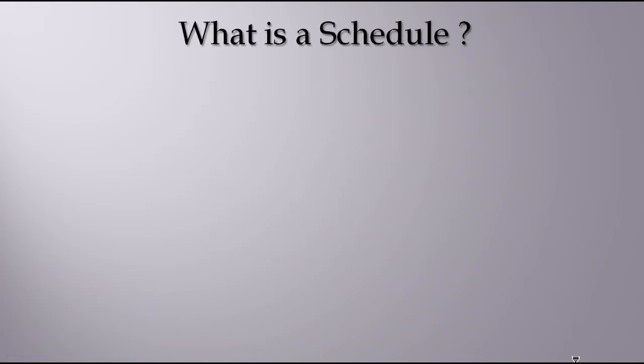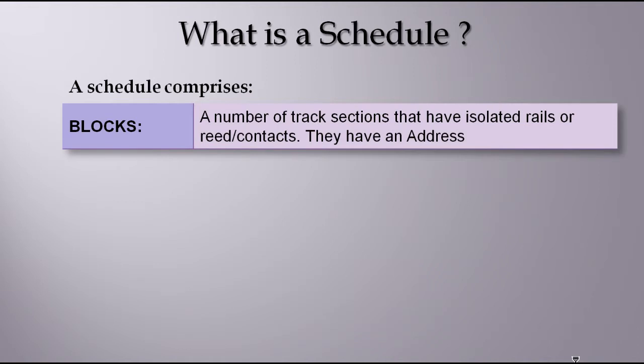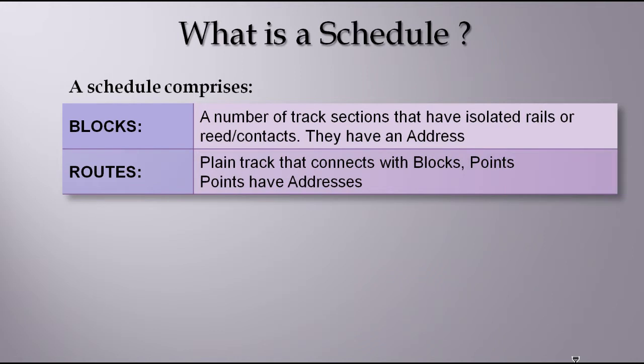First of all, what is a schedule? A schedule comprises in Train Controller of a series of blocks, which are a number of sections of track where one round is isolated or there is a reed or a contact, and these in turn have to have addresses so it can feed back through to the controller so the system knows where the train is and in what direction it is moving.